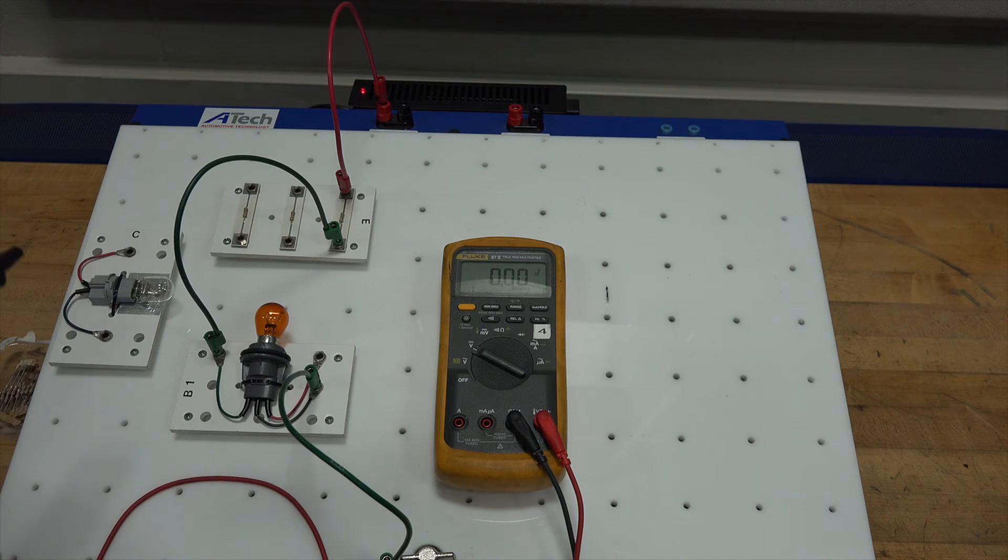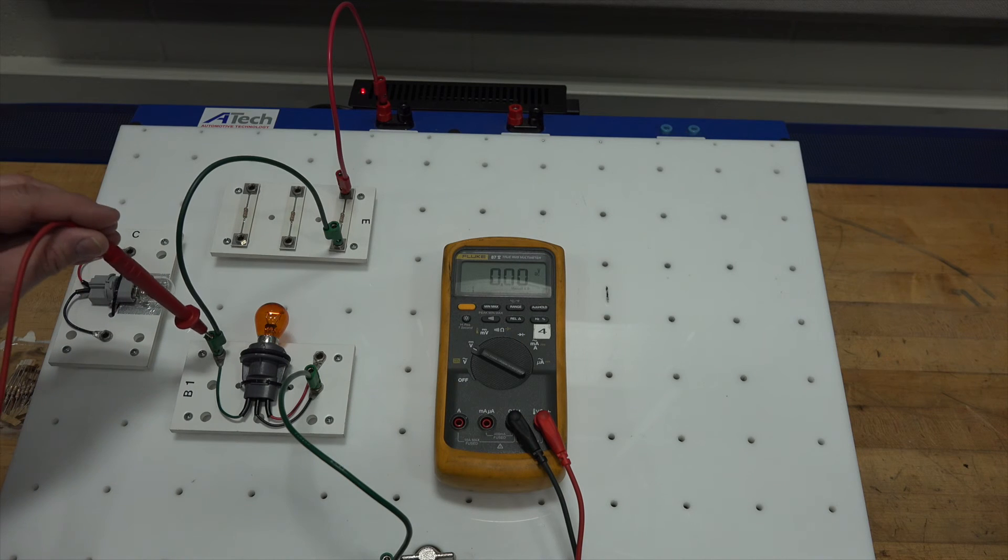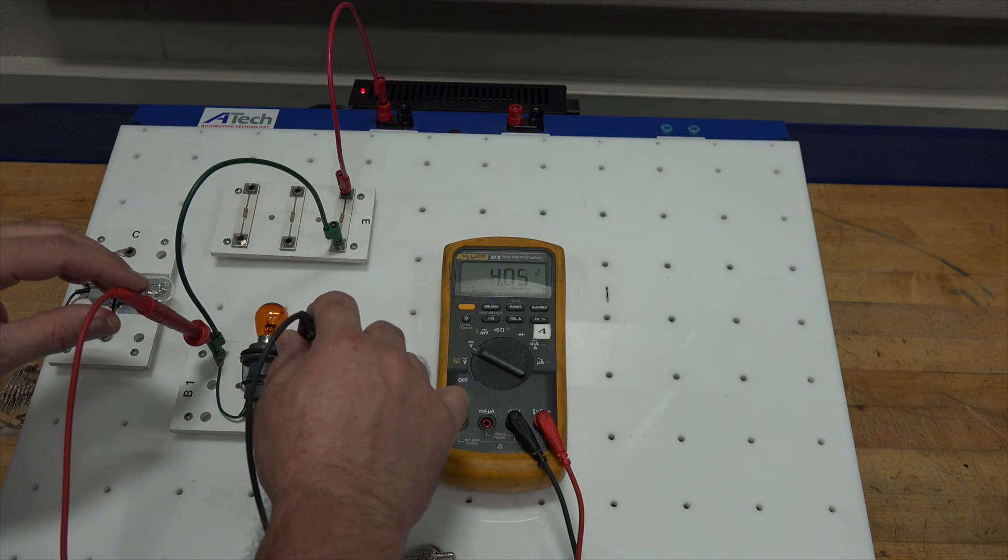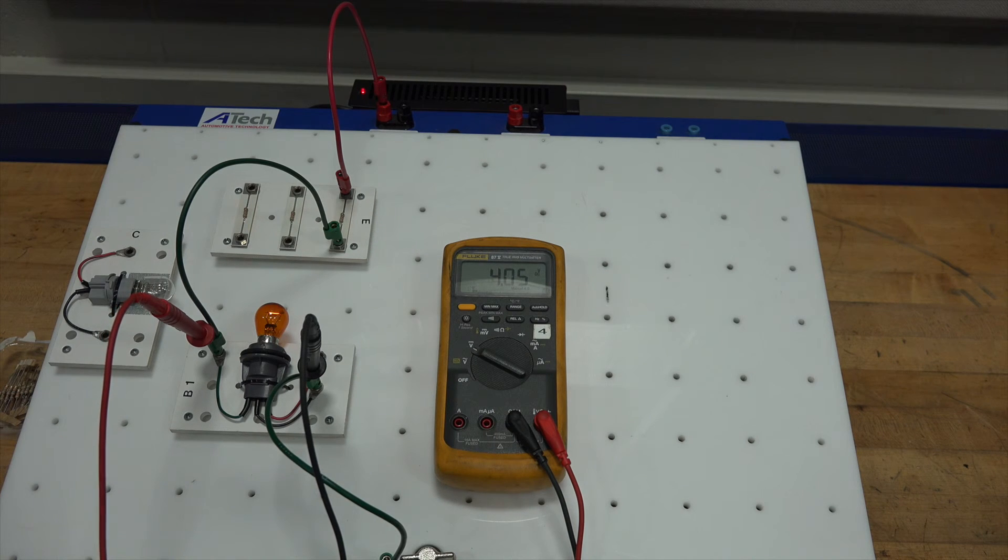Now, if I measure the voltage drop of the load, the light bulb, here I see that we have a little over 4 volts. And that's to be expected here. If I have 4 volts available to that light bulb, and that light bulb is the only load from there to ground, then it should drop all of the voltage across it. If the circuit was operating properly, I would have a full 12 volts drop across that load.